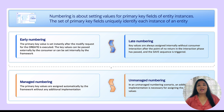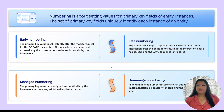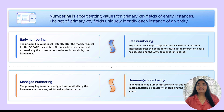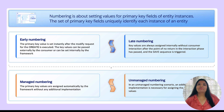Next comes the late numbering scenario. Here, the key values are always assigned internally without consumer interaction after the point of no return in the interaction phase has passed and the save sequence is triggered. This is particularly useful in scenarios where gap-free key value assignment is crucial, for example, in invoice numbers.